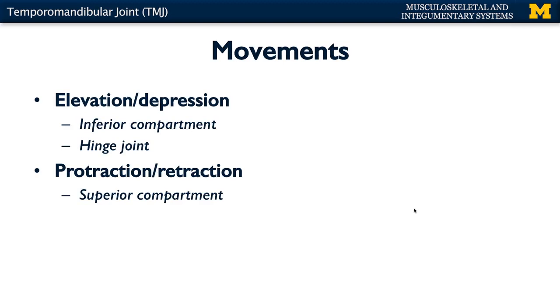Now let's talk about the movements that can occur. Remember, the articular disc divides the joint into two different compartments. The inferior compartment plays a bigger role in the more dominant movement at the TMJ, which is elevation and depression — elevation is closing your mouth, depression is opening your mouth. This is an example of a hinge joint. The superior compartment is doing more of a sliding back and forth, which is referred to as protraction and retraction.